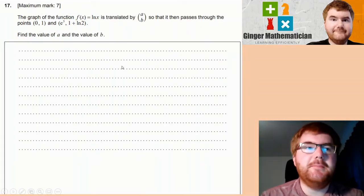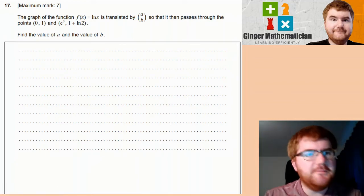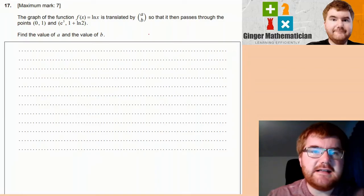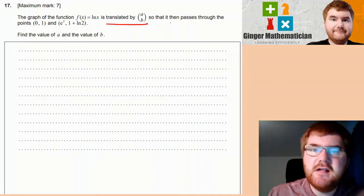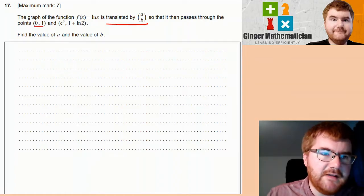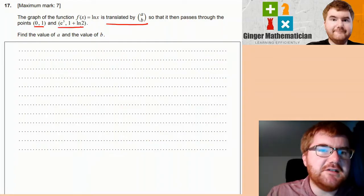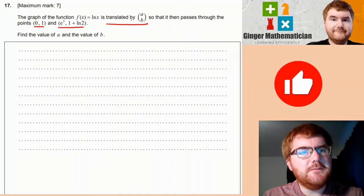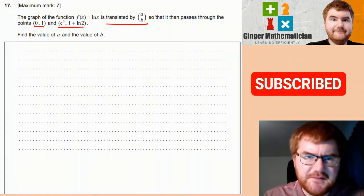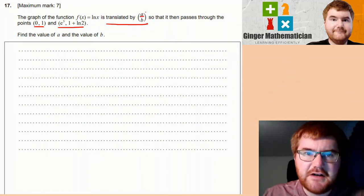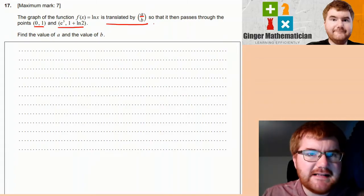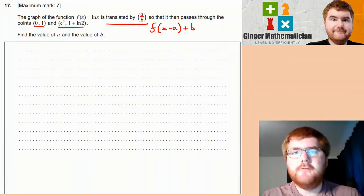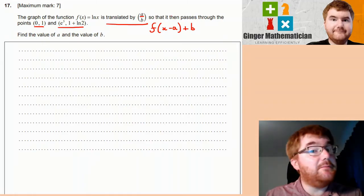On to the hardest question on the paper — question 17. It's a nice mixture of logarithms and transformations of functions. The graph of f(x) = ln(x) is translated by vector (a, b) so that it passes through the points (0, 1) and (e³, 1 + ln 2). We need to find a and b.